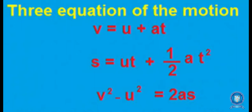For variable acceleration there are two methods. One is displacement as a function of time, and the other is acceleration as a function of time. When displacement is a function of time, the displacement equation is given in terms of time; we differentiate once to get velocity (ds/dt) and differentiate twice to get acceleration (d²s/dt²). When acceleration is a function of time, we integrate once to get velocity and twice to get displacement.